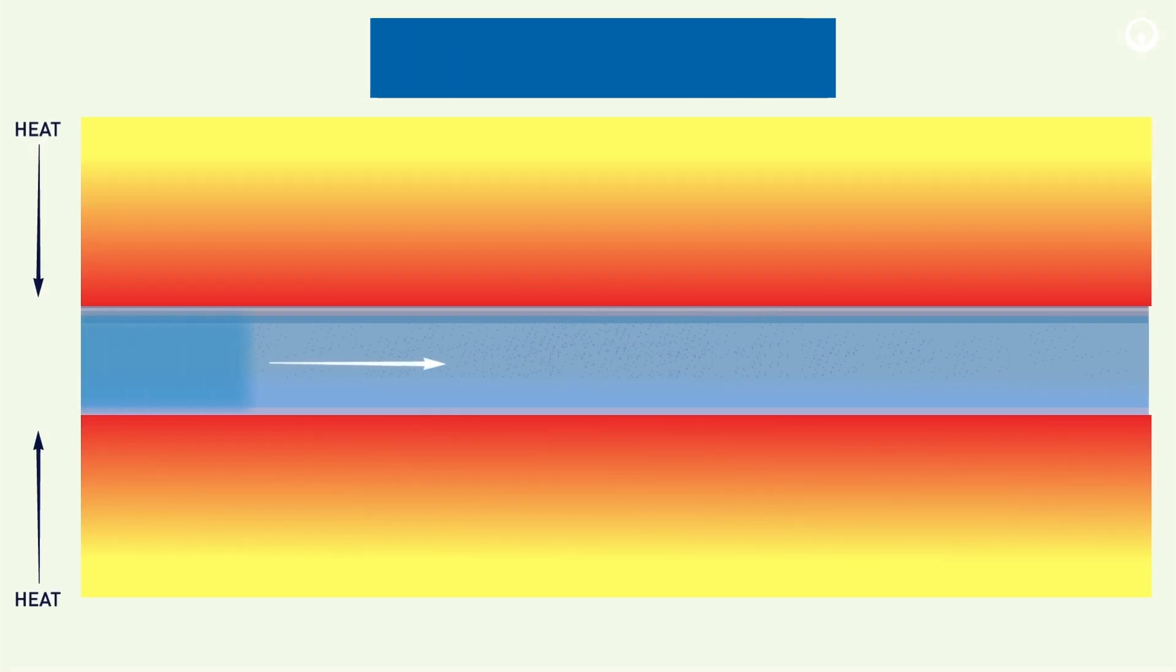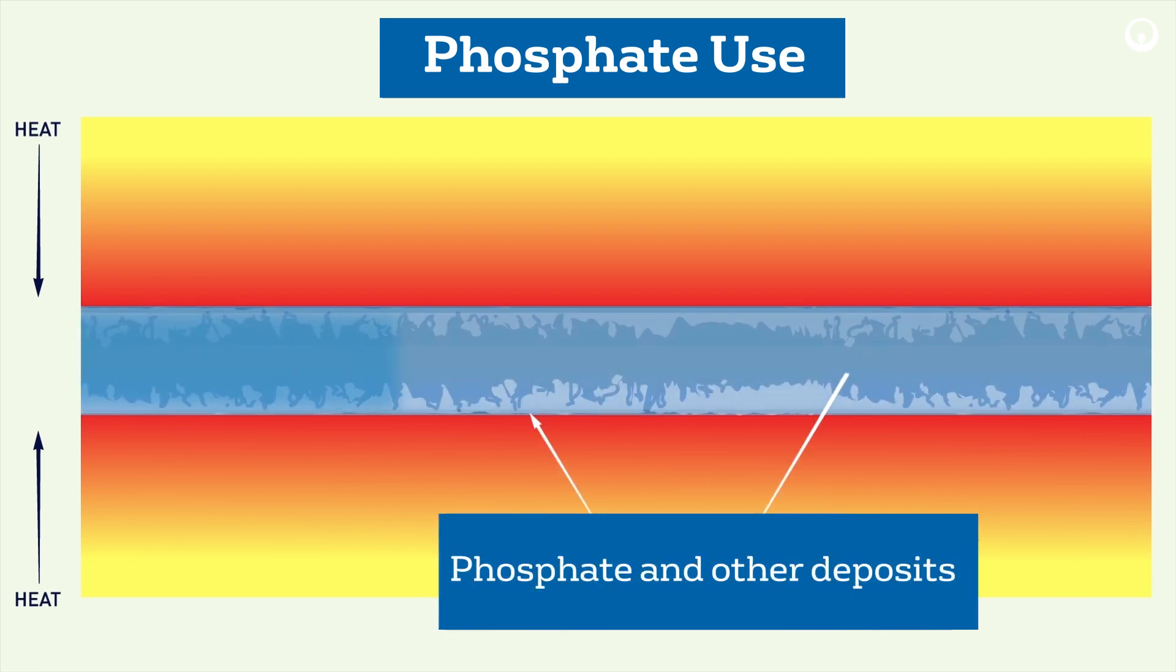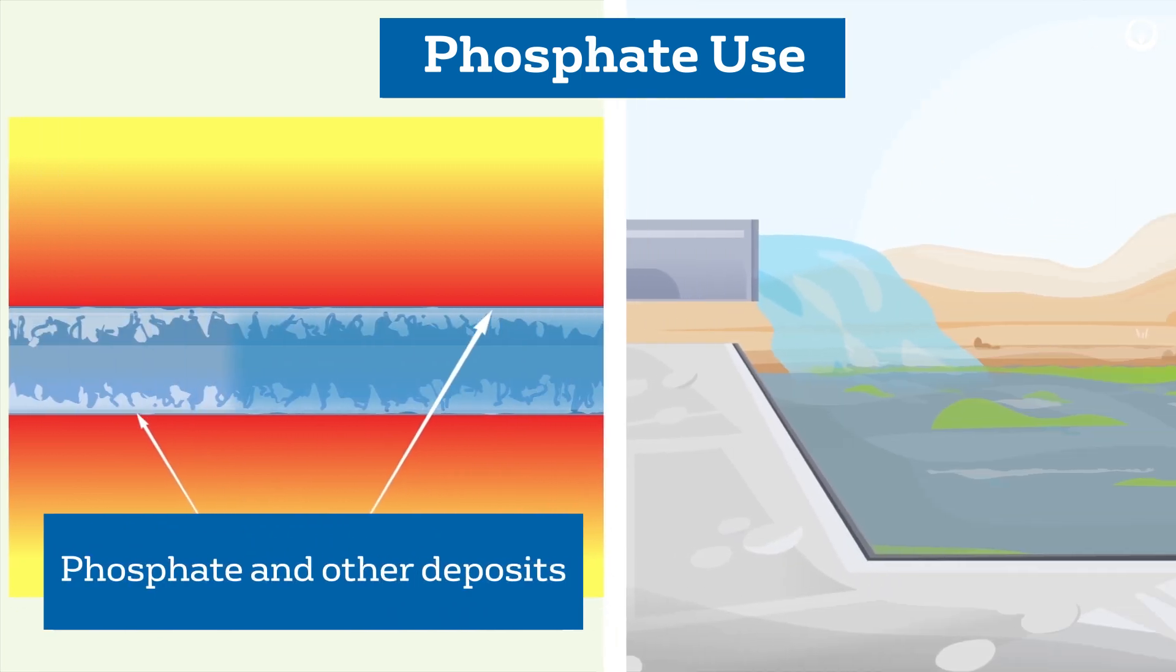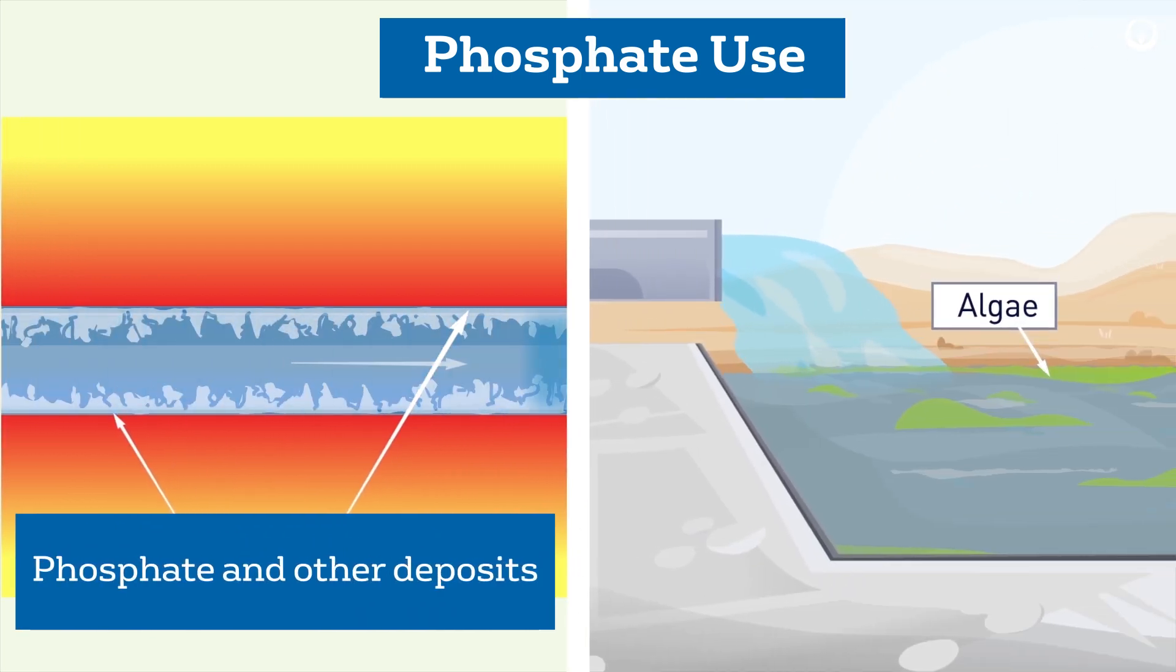In cooling water systems, using phosphates for corrosion and deposition control can lead to phosphate deposition, algae growth, and discharge violations.